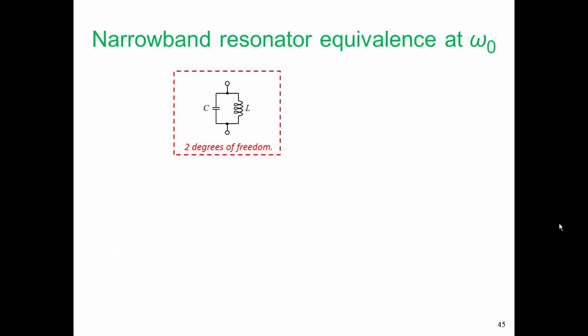And before we do that, let's look at a narrowband realization of the resonator. We're going to obtain a narrowband resonator equivalence at radian frequency omega 0. When we use F0 or omega 0, we're talking about the center frequency of our design in nearly all cases. In this case, F0 or omega 0 is going to be the resonant frequency of our LC resonator, and that is also the center frequency of the bandpass filter that we're designing. The LC resonator has two degrees of freedom. We can change the capacitance value, and we can change the inductor value.